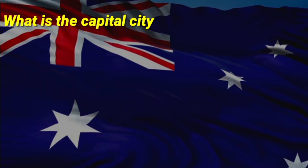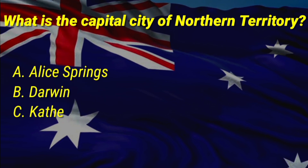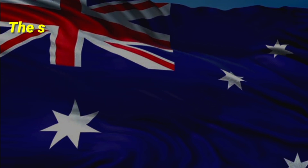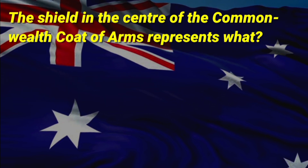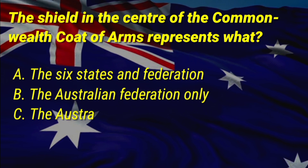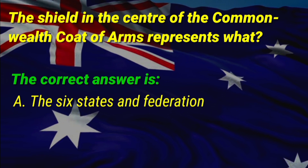What is the capital city of the Northern Territory? A: Alice Springs, B: Darwin, C: Katherine. The correct answer is B, Darwin. The shield in the center of the Commonwealth coat of arms represents what? A: the six states and federation. The correct answer is A, the six states and federation.